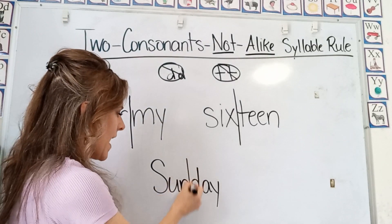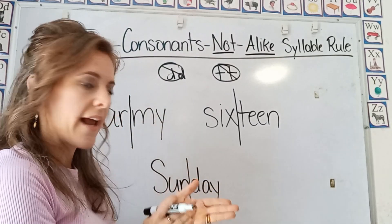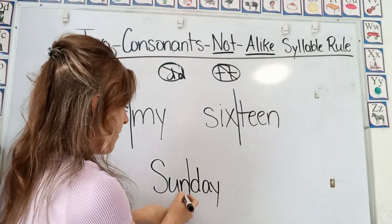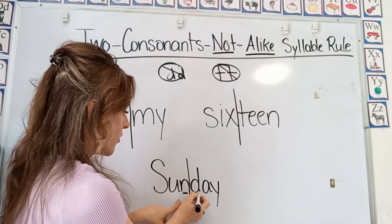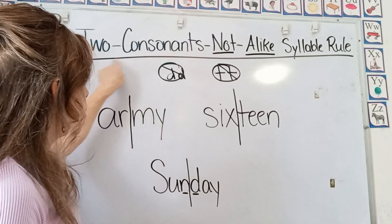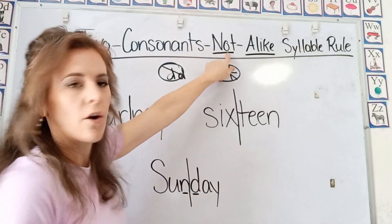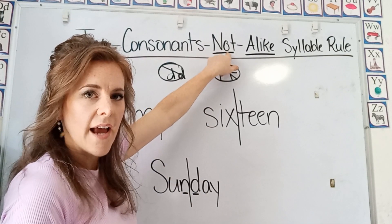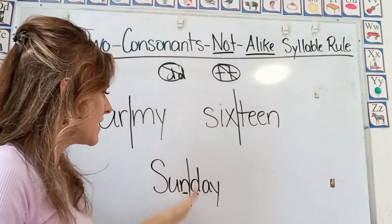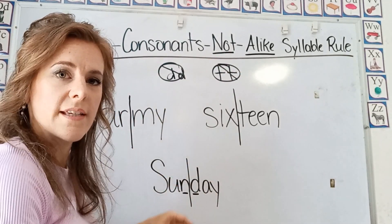And Sunday — we have our N and our D. These are two consonants that are not alike, but we can still divide them for the syllables.